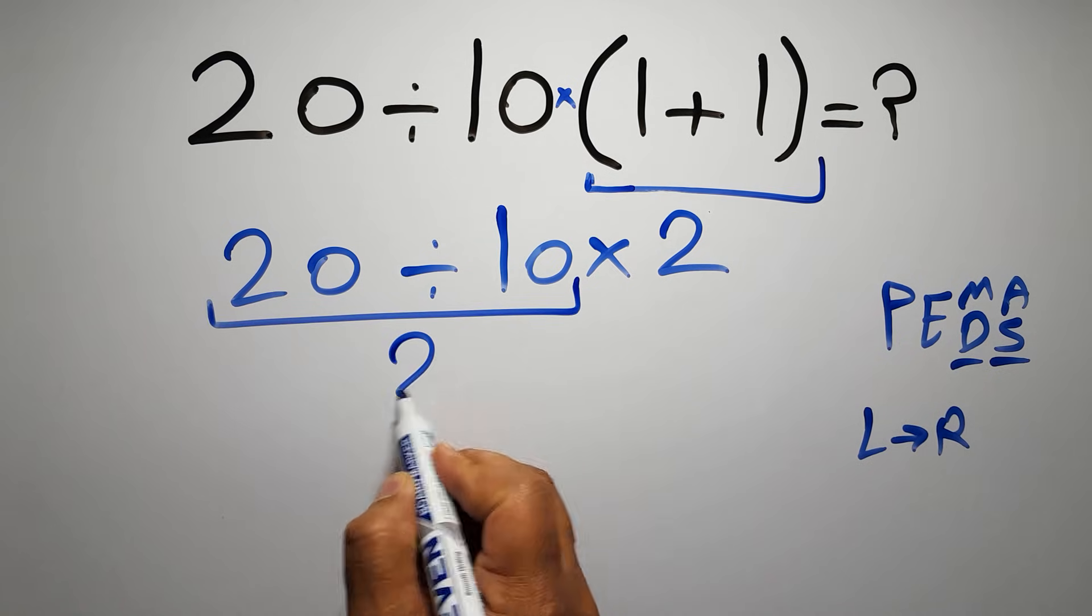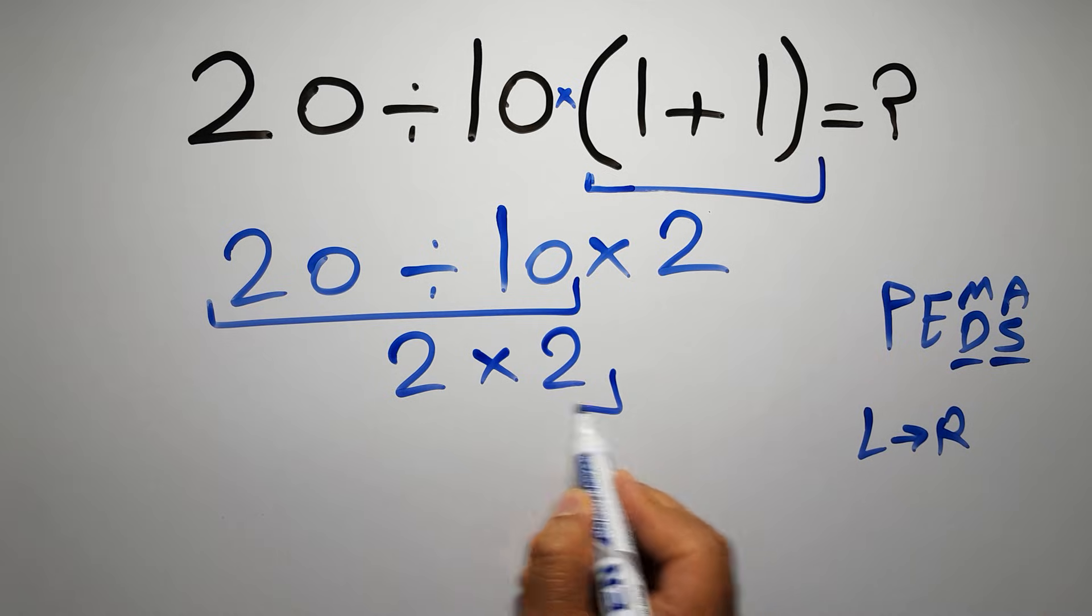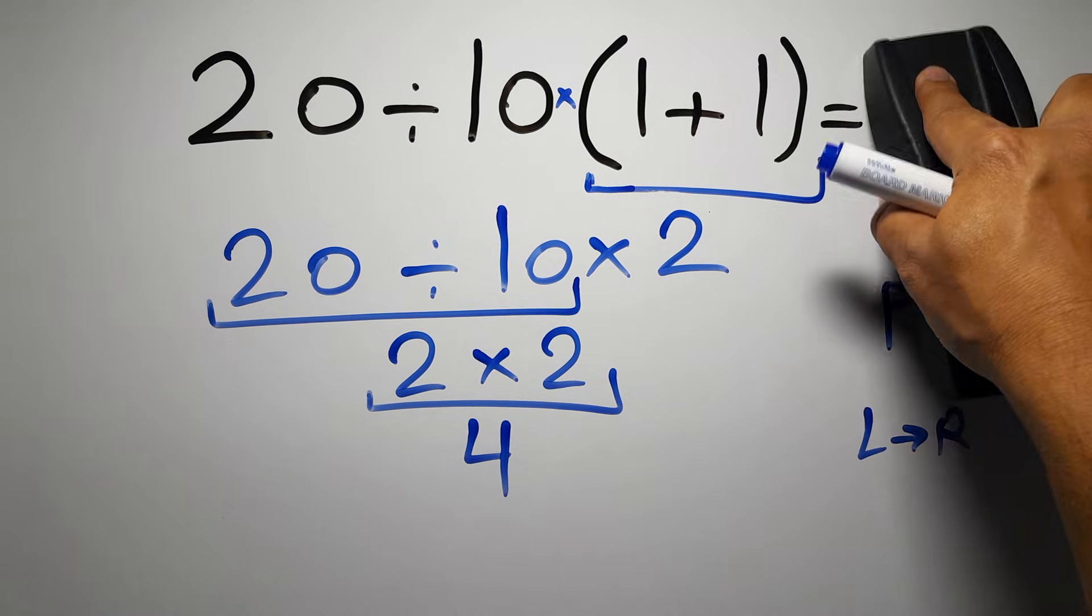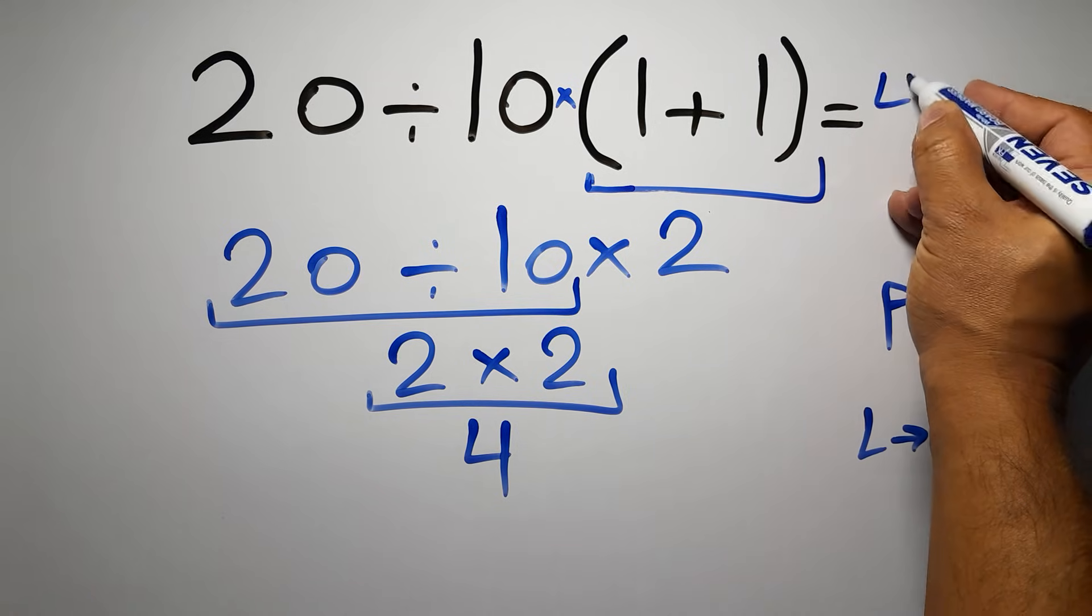So 2 times 2 which equals 4, and this is our final answer to this problem. The correct answer is 4.